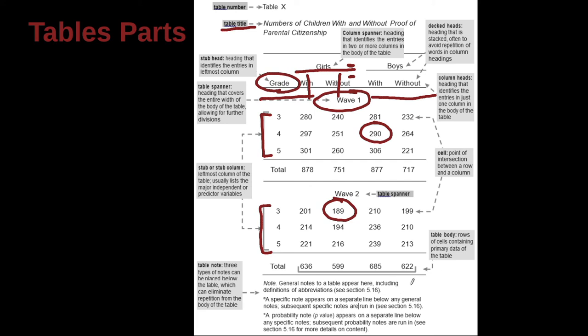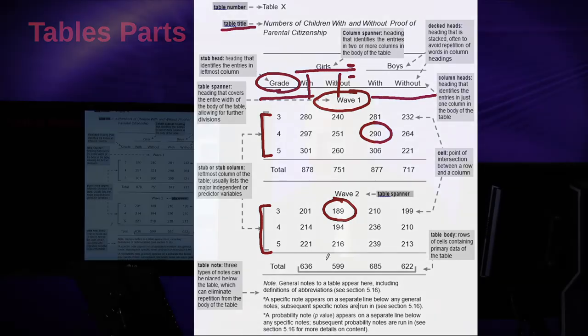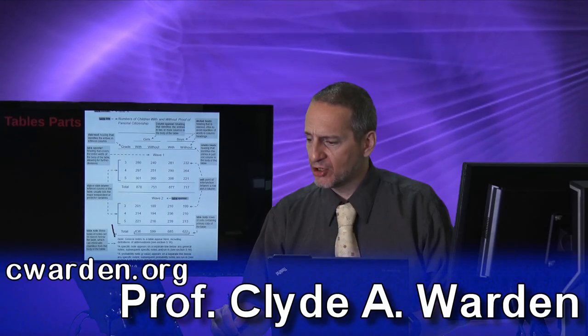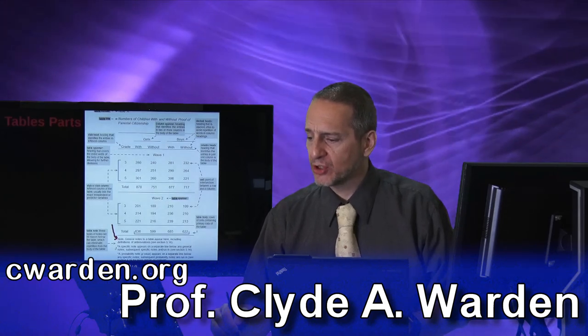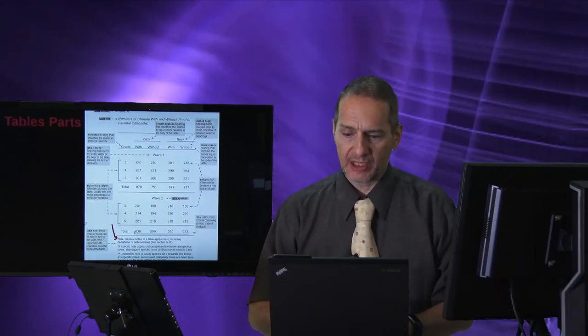Okay, and then we come down to the bottom, and here we're saying table body, which really is anything inside the table. We can call the table body. These rows that are inside the table can be called the body. Down at the bottom of the table is the note area, so you can see the word note here. If you have any special notes, you put them down here at the bottom. We're going to cover that in a second.